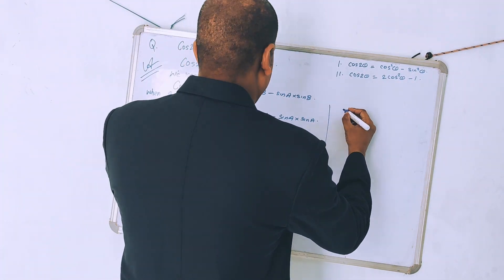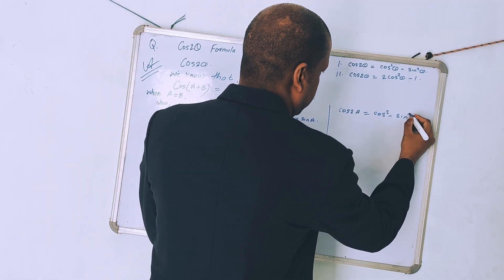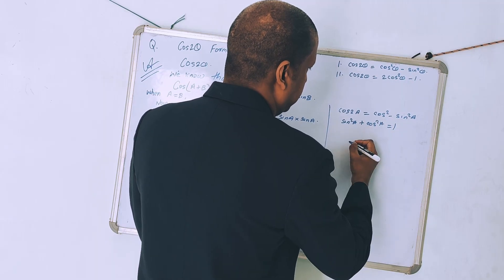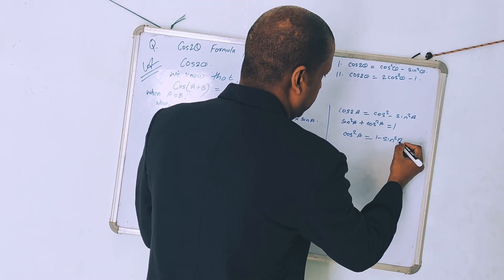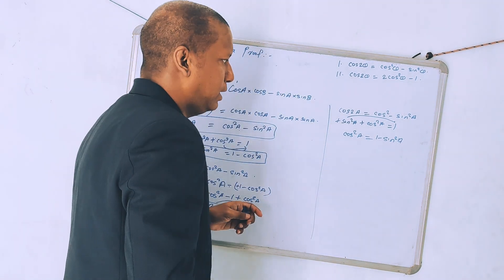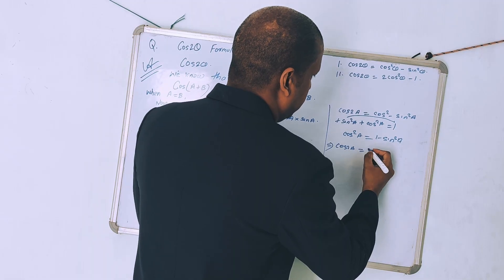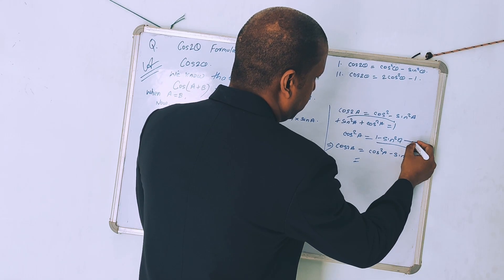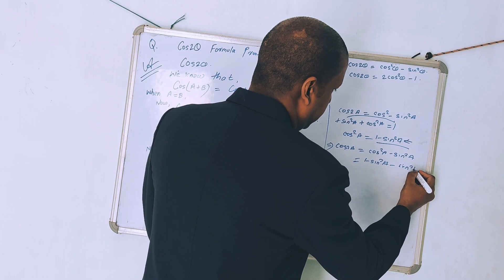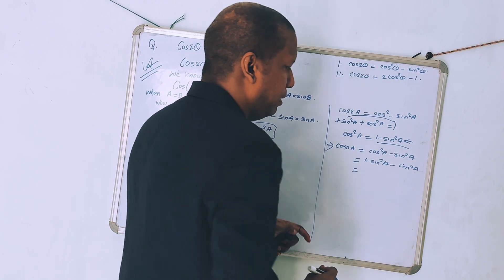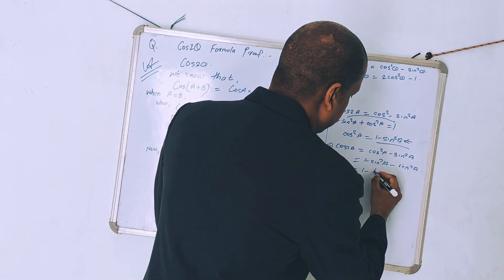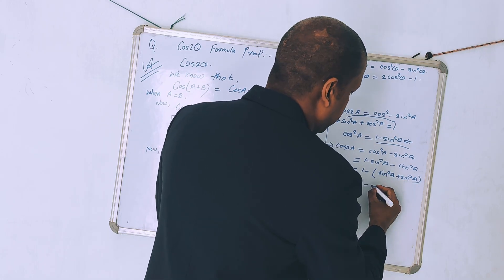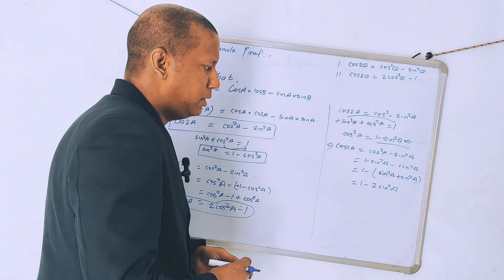Next, we convert cos 2A = cos² A - sin² A into sin form. We know sin² A + cos² A = 1, so cos² A = 1 - sin² A. Substituting: cos 2A = (1 - sin² A) - sin² A = 1 - 2sin² A. So cos 2A = 1 - 2sin² A.